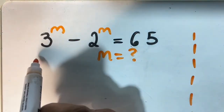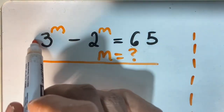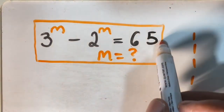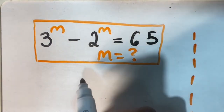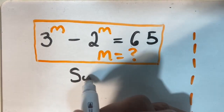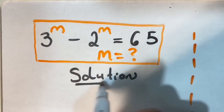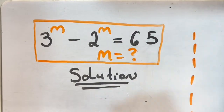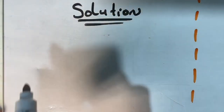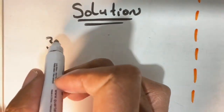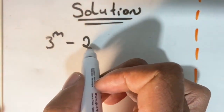Greetings again everyone, welcome back to my channel. In today's lesson we are going to be looking at another equation where we have 3 to the power of m minus 2 to the power of m is equal to 65, and we are given to solve m. If you would like, you can pause this video and try to solve this equation, or go ahead and look at my previous videos on how to solve these exponential equations. So let us now go ahead and solve this equation.